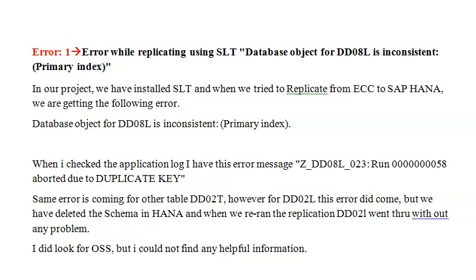So when I check the application log, I have this error message: Z_DD02L_023. And I run this - it fails due to duplicate key. The same error is coming for other table DD02T. However, for DD02L this error did come, but we have deleted the schema in HANA, and when we ran the replication for DD02L it went through without any problem.